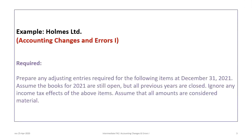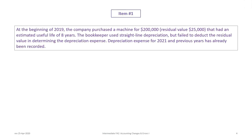This tutorial is based on the Holmes Limited example. We will prepare any adjusting entries for the items that come up. We'll assume that the books are open for 2021 and all previous years are closed. We will ignore any income tax effects and assume that all amounts are considered material.